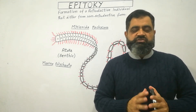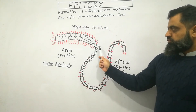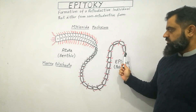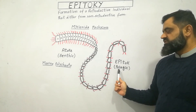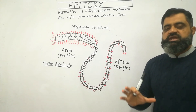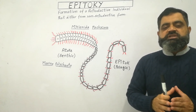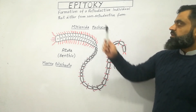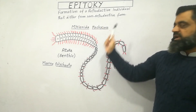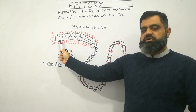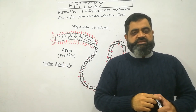The definition of epitoky is: the formation of a reproductive individual. From this area to this area of the body is a reproductive organism known as the epitoke, which lives in the pelagic region and has specialized appendages for swimming to reach a mate. This differs from the non-reproductive form — the atoke — which is benthic. I hope this term makes sense.